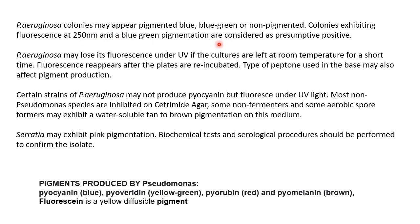Colonies exhibiting fluorescence at 250 to 254 nanometers and blue-green pigmentation are considered presumptive positive. Pseudomonas aeruginosa may lose its fluorescence under UV if cultures are left at room temperature for a short time, but the plate can be re-incubated and fluorescence can reappear. The fluorescence may also be affected by the type of peptone used in the base media. Certain strains of Pseudomonas aeruginosa may not produce pyocyanin but will still fluoresce under UV light.